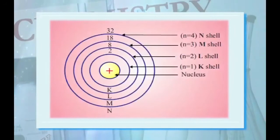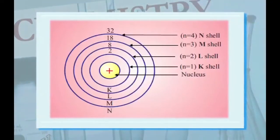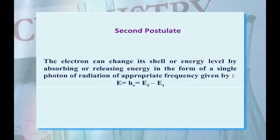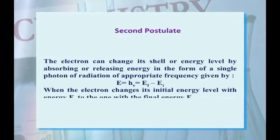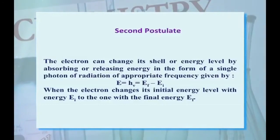The different stationary states are indicated and their different shells or orbits are represented by the symbols K, L, M, N. Second postulate: the electron can change its shell or energy level by absorbing or releasing energy in the form of a single photon of radiation of appropriate frequency, given by the relation E = hν = E_f minus E_i.